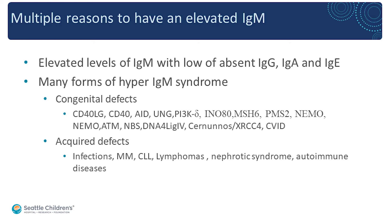Hyper-IgM simply means you have very high levels of an antibody called the IgM antibody in circulation. In general, if you have an inherited condition associated with an elevated IgM, this is generally associated with low or absent levels of other circulating antibodies — specifically IgG, IgA, and IgE. There are many forms of hyper-IgM, with many different genes associated with elevated IgM levels. The first four — CD40LG, CD40, AID, and UNG — are classified as the classic forms.